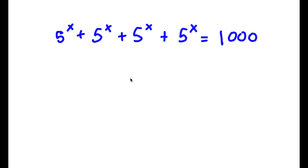In this problem, I have φ to the power of x plus φ to the power of x plus φ to the power of x plus φ to the power of x is equal to 1000. To solve this, I'm going to first start by factoring out φ to the power of x.